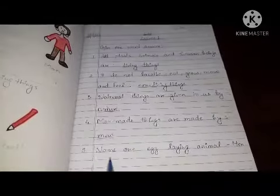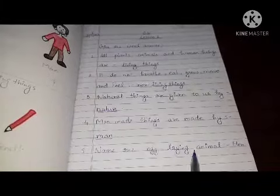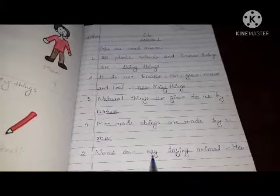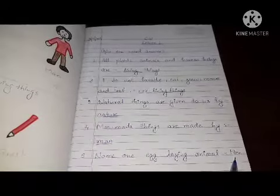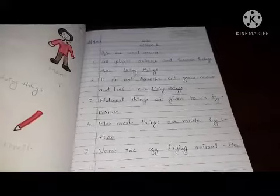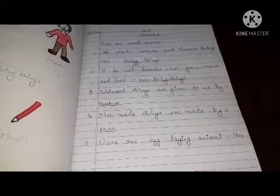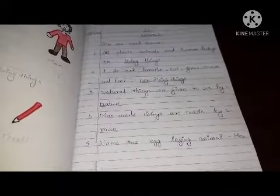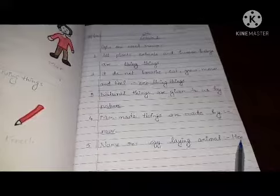Number five is: name one egg-laying animal. So you have to write one egg-laying animal, joh egg dayte hain. That is hen. Iske alawah, aur kaun se animals hain joh egg dayte hain? Like duck, bird. So these are some animals who are egg-laying animals. So write any one animal name.